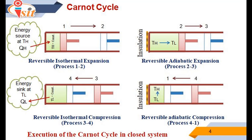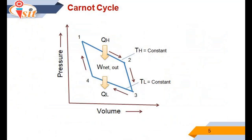The fourth process of the Carnot cycle is reversible adiabatic compression, process 4 to 1, where the temperature rises from TL to TH. At state 4, the low temperature reservoir is removed and insulation is put back on the cylinder head. The gas is compressed in a reversible manner and returns to initial state 1. The temperature rises from TL to TH during this reversible adiabatic compression process, which completes the cycle. The PV diagram of the cycle is shown in the figure.